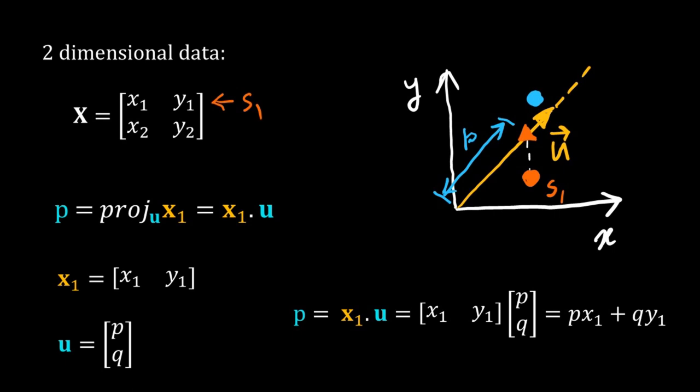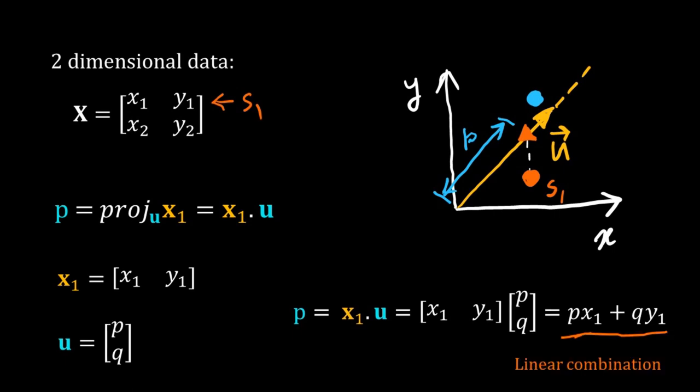Here note one important point. This new position of our data is coming from the linear combination of X1 and Y1, the old coordinates. That is why PCA is a linear technique. This way I will also get the projection of sample 2. That is quite easy.